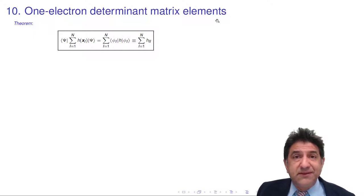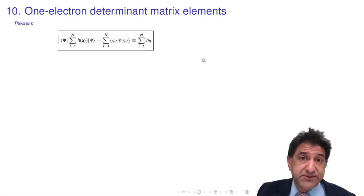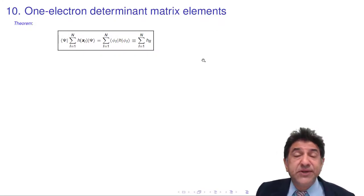Now remember, the Hamiltonian for a system comprises one-electron terms, for example kinetic energy and nuclear electron attraction energies. They involve the coordinates of one electron, and two-electron terms. The only two-electron term is the two-electron repulsion integral. We're going to talk about the one-electron integrals.